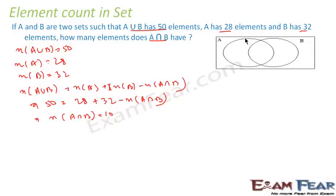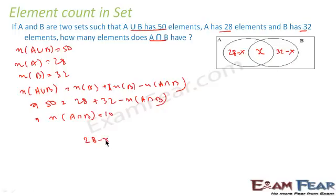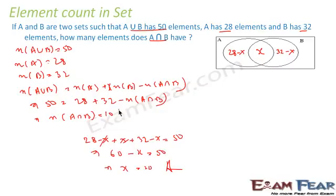Now let's solve this using a Venn diagram. Set A and Set B share common elements A intersection B, which we call X. A has 28 elements, so the part of A outside the intersection is 28 minus X. B has 32 elements, so the part of B outside the intersection is 32 minus X. Since A union B is 50, we get: (28 − X) + X + (32 − X) = 50, so 60 − X = 50, giving X = 10. I recommend using Venn diagrams because you get a clearer picture.